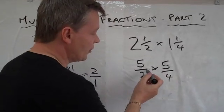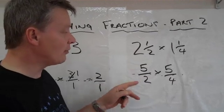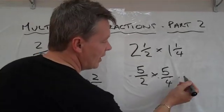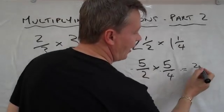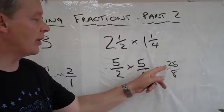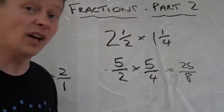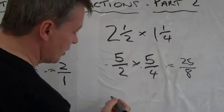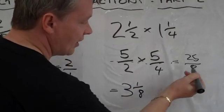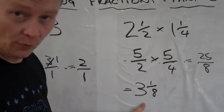Treating everything along the top the same as everything along the bottom, there's no number that will go into both top and bottom, so I can't cross-divide. So I'm going to work it out: 5 times 5 is 25, and 2 times 4 is 8. So the fraction is 25 over 8, which is the answer. But it's nice to break that down into a whole number and a remainder. 8 goes into 25 three times, because 3 eights are 24, and then 1 eighth is left over. So the answer is 3 and 1 eighth.